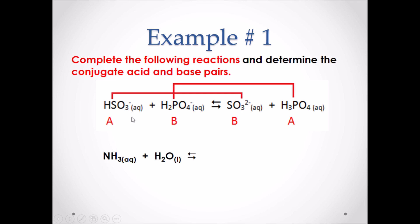Something else to consider is the charge on each substance. Every hydrogen carries a +1 charge, so if you gain a hydrogen you gain a positive charge, and if you lose a hydrogen you lose a positive charge. HSO3- has a charge of -1; when it loses a hydrogen it becomes SO3 2-. H2PO4- had a charge of -1; since it gained a hydrogen it gained a positive charge, bringing H3PO4 to an overall charge of zero.